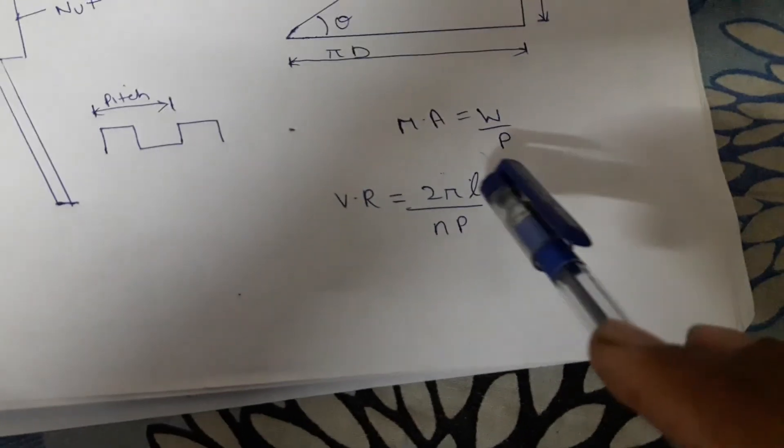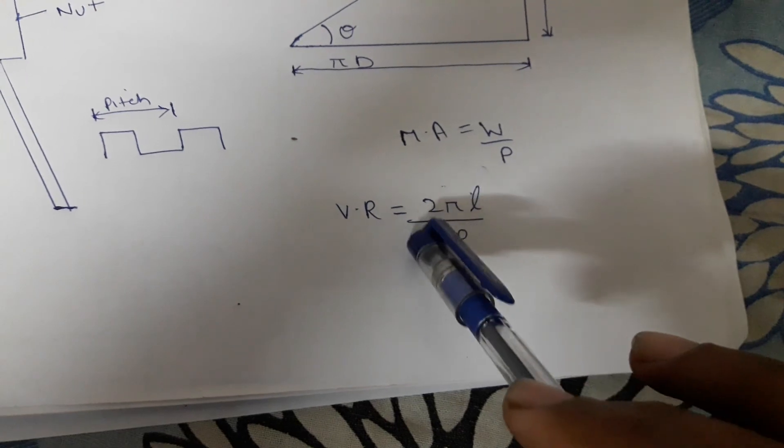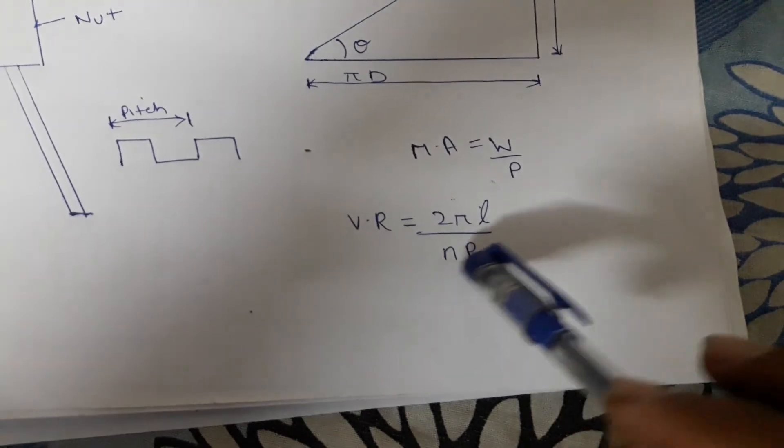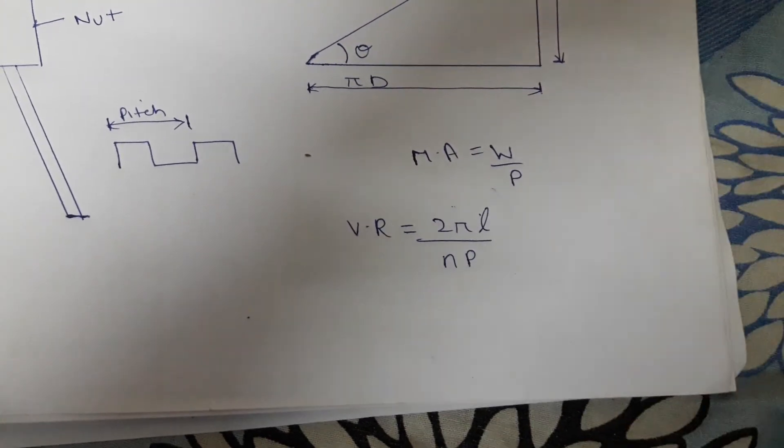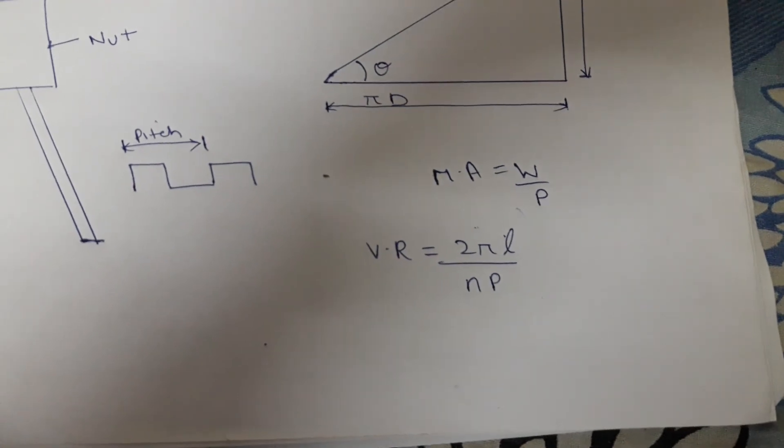So basically there is N. N is equal to number of starts of square threaded screw and pitch. So you can easily calculate the mechanical advantage and velocity ratio.